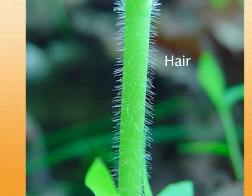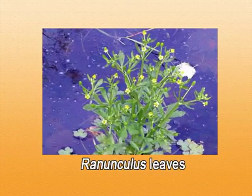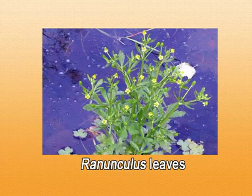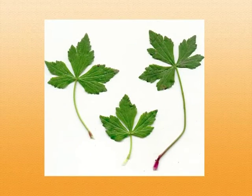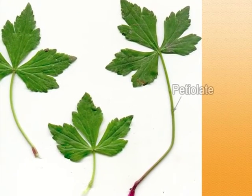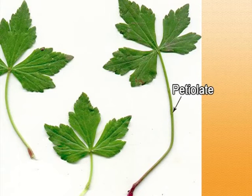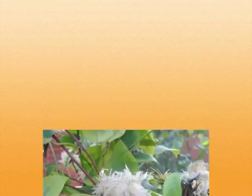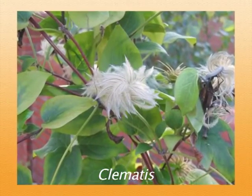On the stem, the leaves are simple. The leaves are both cauline as well as ramal, usually arranged in an alternate fashion with a spiral arrangement, but there is an exception in Clematis where the leaves are opposite. Ranunculaceae is unique in having no stipules — that means it is exstipulate. The leaves are petiolate, meaning they have a stalk. The leaves are usually simple, but compound in one genus called Clematis.